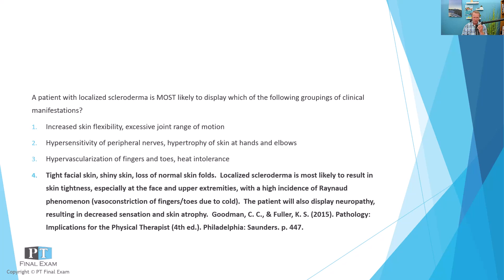It is possible to have something called diffuse scleroderma. Scleroderma primarily refers to scarring of the epidermis and hypodermis, but systemic sclerosis is where you get scarring that occurs not just on the skin but also in the internal organs. It's much more severe — it can affect the gastrointestinal system, certainly the esophagus and esophageal tissues, causing lots of GI complications. In this case, we're talking about localized scleroderma.